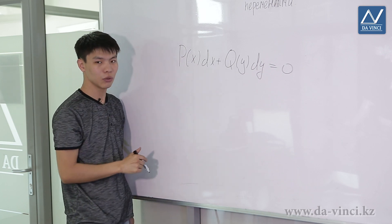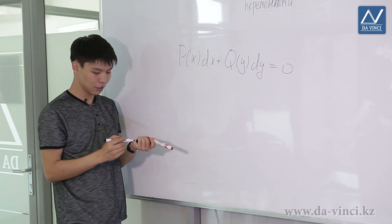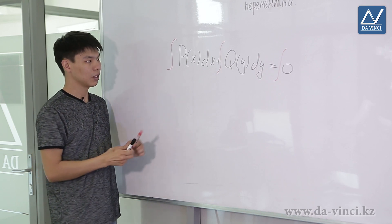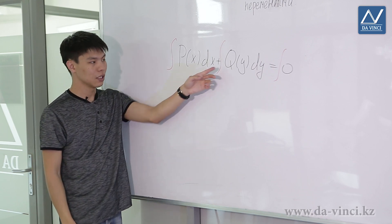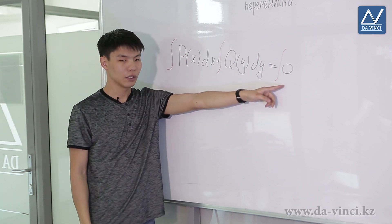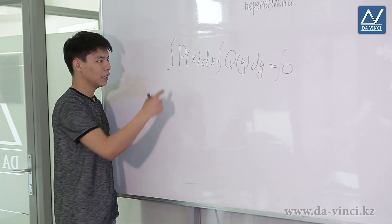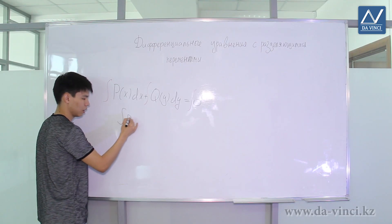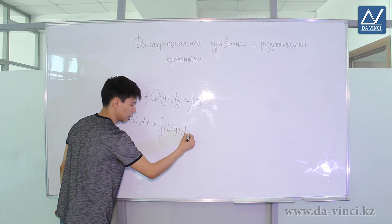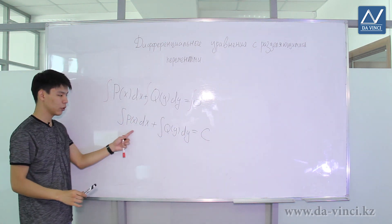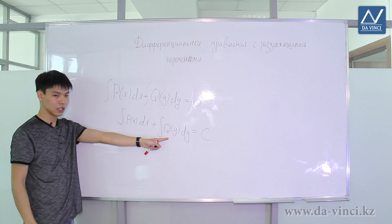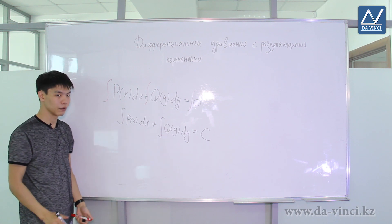This means that variables x and y are already separated from each other. To solve such an equation, we just integrate it completely — take the integral on the left and take the integral on the right. When we calculate these integrals, each side produces a constant, and the integral of zero gives a constant as well. Moving all constants to the right and writing them as a single constant c, we get the general solution: the integral of P(x) dx plus the integral of Q(y) dy equals c. If we have the opportunity to express y explicitly, we do so; if not, we leave the solution in implicit form.